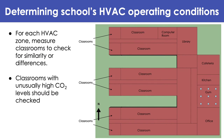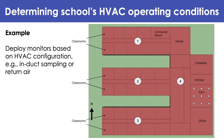For determining a school's HVAC operating conditions, you can check for each HVAC or thermal zone, measure the classrooms in that zone, and check for similarities and differences. Classrooms with unusually high CO2 levels should be checked for filter or insulation maintenance. You can also deploy monitors based on HVAC configuration, like in-duct sampling or return air measuring. To maintain well-ventilated classrooms, periodic ventilation system testing or continuous CO2 monitoring is recommended.